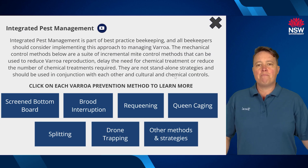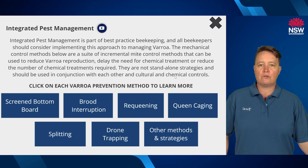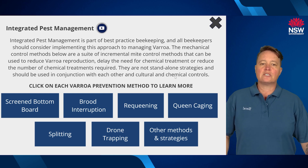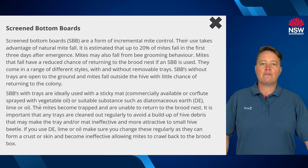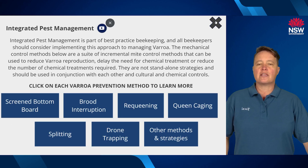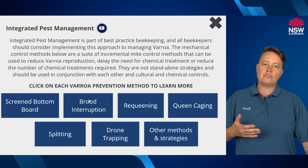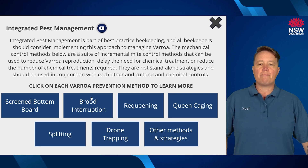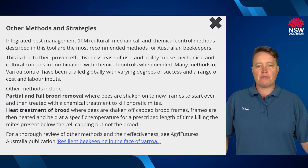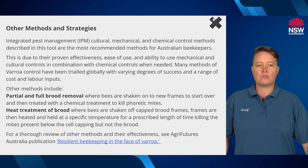Integrated pest management is about best practice beekeeping. It shows you all the different methods you should be using as a form of incremental control before you need to use something stronger. If you click on each of the prevention methods it gives you information about how to use that method. Click the X to close and go back to the integrated pest management page. You can click on all of them — there are screened bottom boards, drone trapping, and other management strategies and methods.